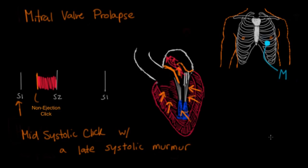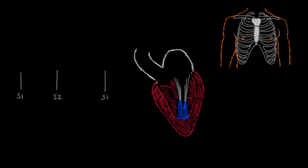Now that we're done with systolic murmurs, let's move on to the diastolic murmurs. I'm going to switch my pen color to green. The first diastolic murmur we're going to talk about is aortic regurgitation.